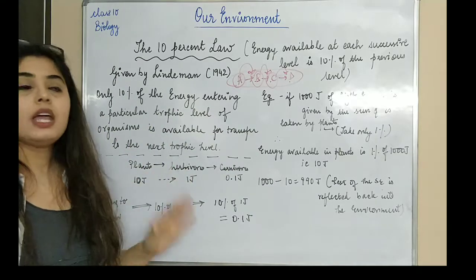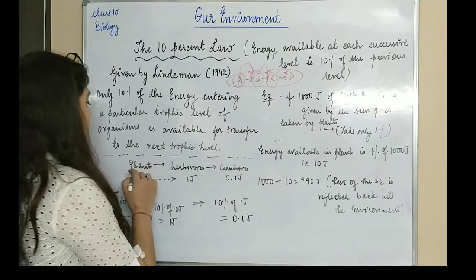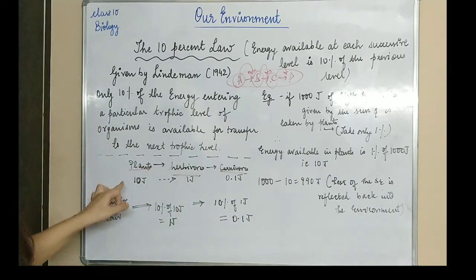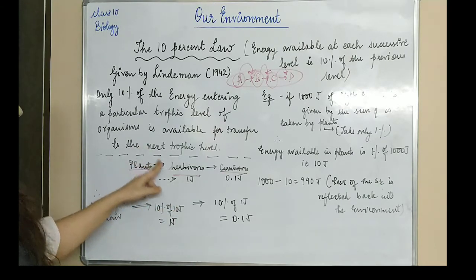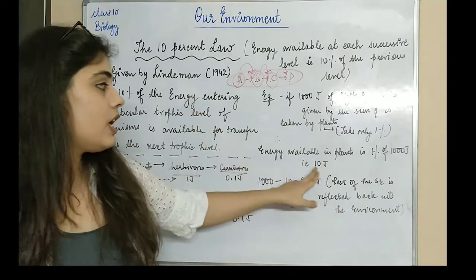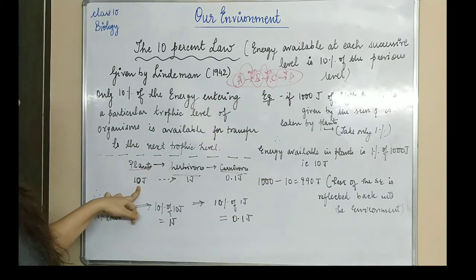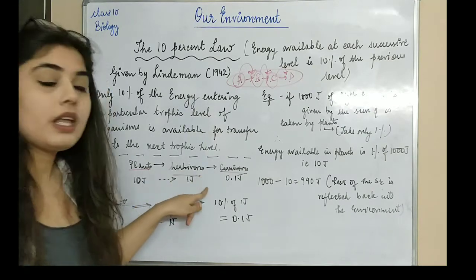Now we have a food chain with plant, herbivore, carnivore. Now the 10% law starts from here. Plants have absorbed 10 joules. Now we'll calculate 10% of 10 joules, which is 1 joule. So herbivores have 1 joule of energy available.